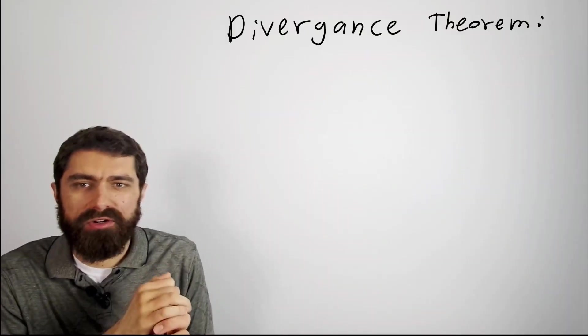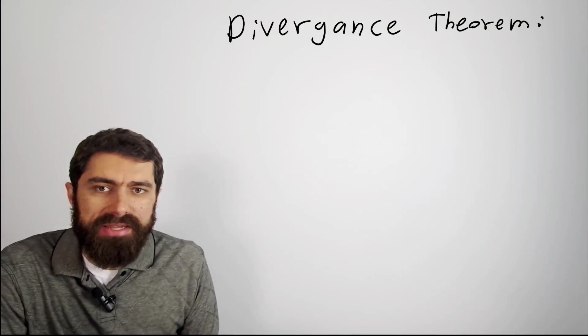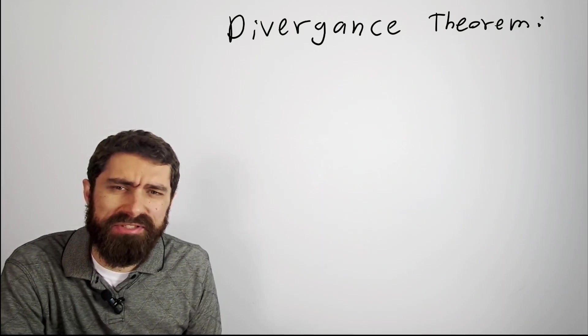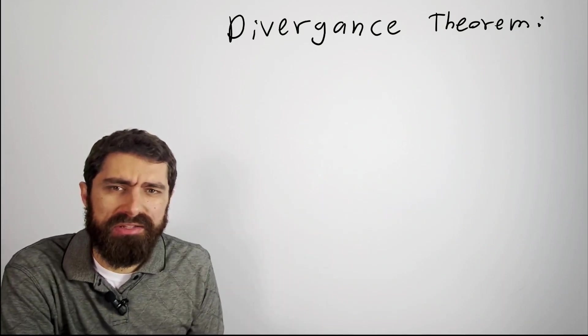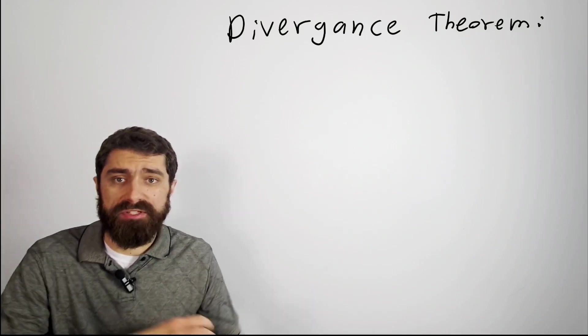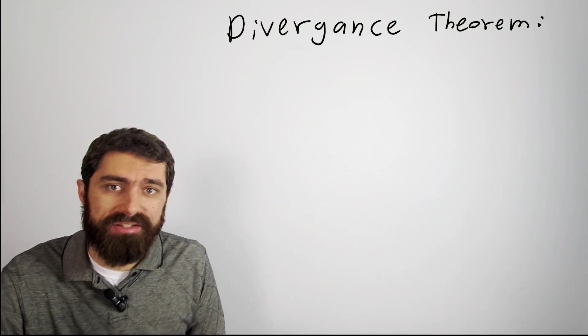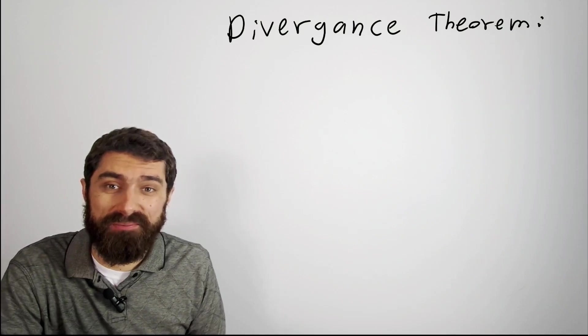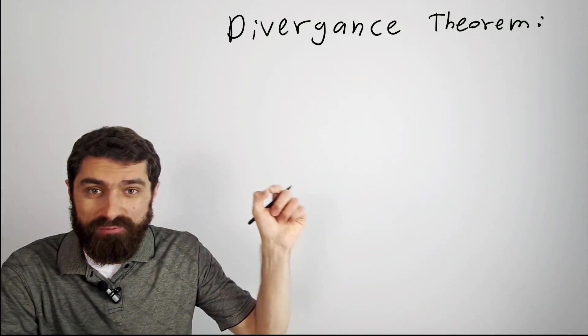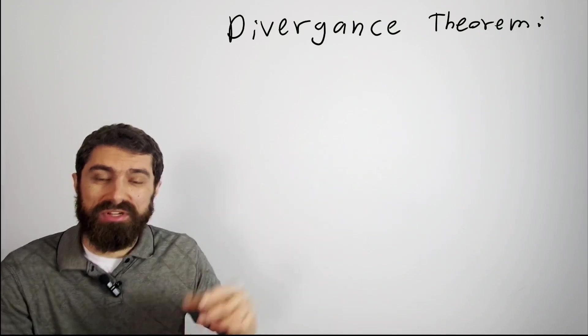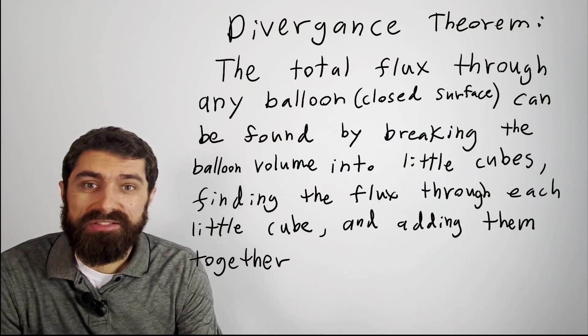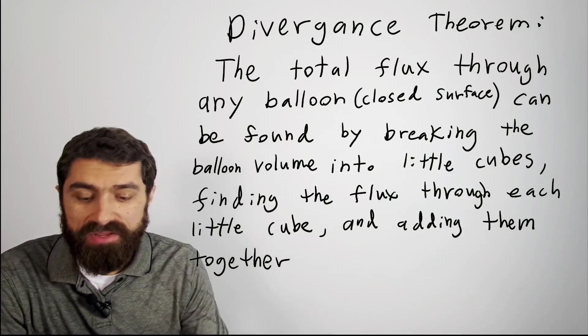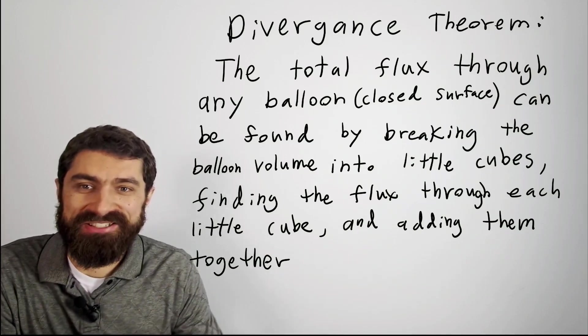So one thing you might be wondering is, why does divergence even matter? Do I even care about an infinitesimally small little cube? What does that have to do with a larger system that is not infinitesimally small? It turns out that there's a theorem called the divergence theorem that does relate what's going on with these little infinitesimal cubes to something much larger. Simply put, the divergence theorem says this, and I'm using somewhat informal language just to make it easier to understand.